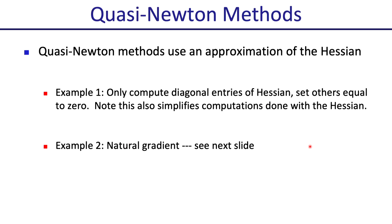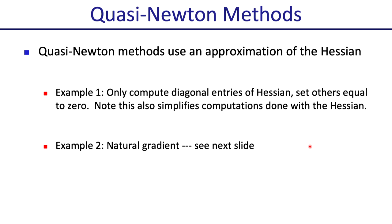To address the Hessian cost, quasi-Newton methods approximate Newton's method without ever building the full Hessian. They do something that is somewhat second-order — not exact, but close enough to get many of the benefits while being more efficient per iteration. Very related is the natural gradient method, which we'll cover first, then quasi-Newton methods.